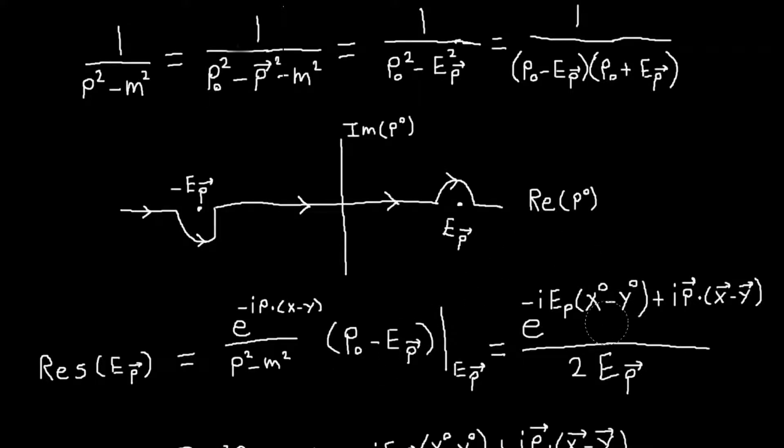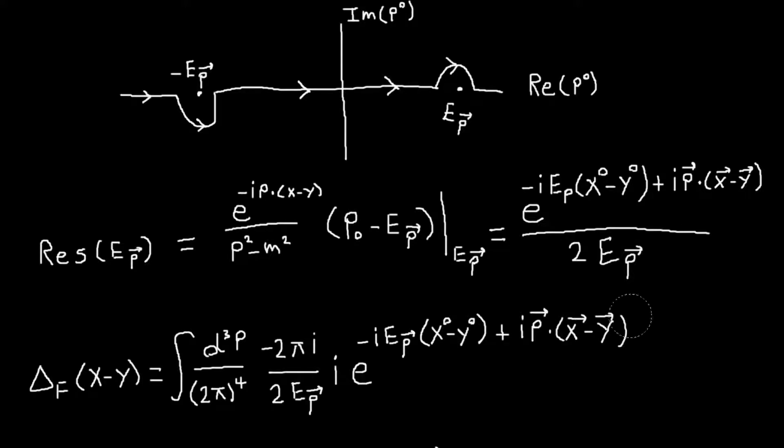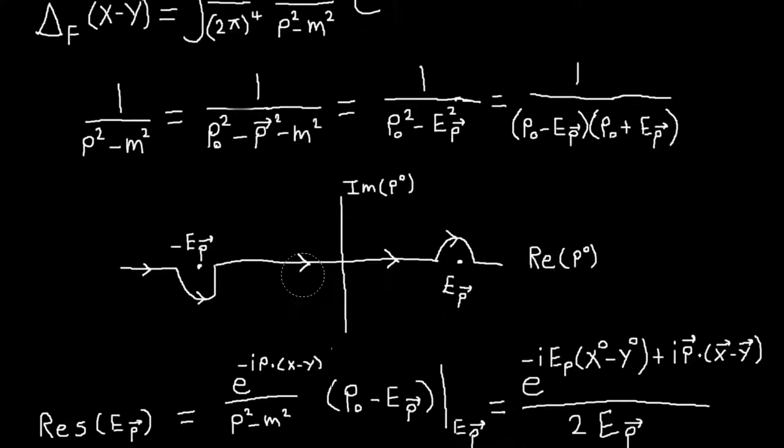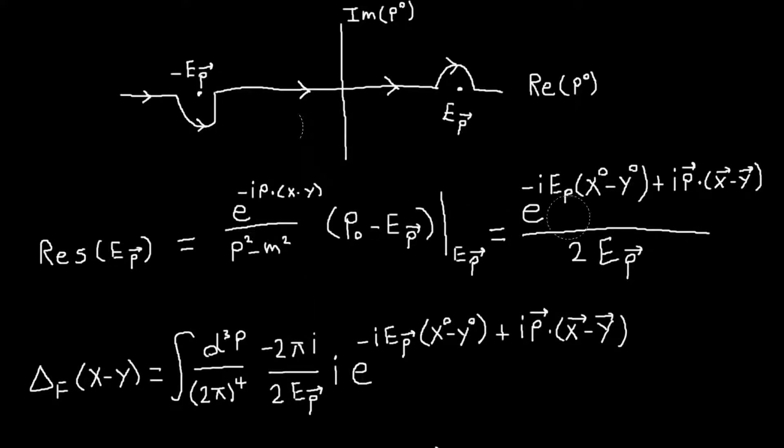And if you do that, then you will just get this. And then, so the value of the contour integral is just 2pi times the sum of the residues. And in this case, it's a minus 2pi because the way we've drawn this, it's a clockwise contour. So you just get a negative 2pi times all of this. And that is how you evaluate the p^0 integral. And so we're just left with the other integrals.